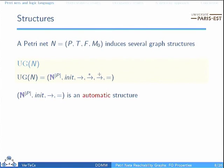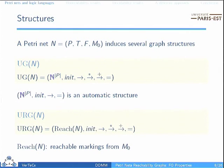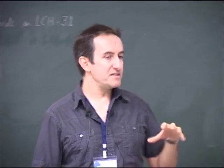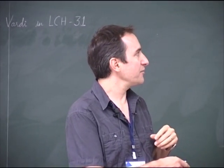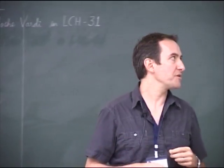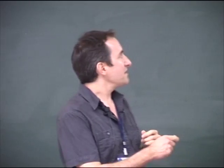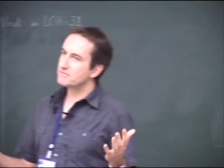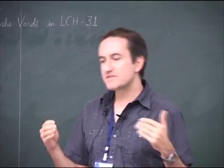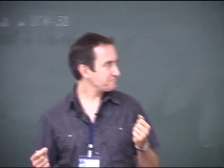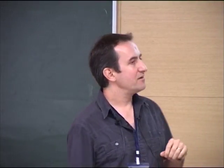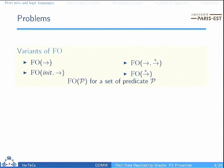The most classical structure used in PetriNets is the reachability graph — it's more or less the same structure, except here we are only interested in markings reachable from the initial one. In this paper, we try to examine several kinds of variants in order to achieve more decidability. These two structures enable us to classify and try to distinguish between things that could be decidable and things that are not.